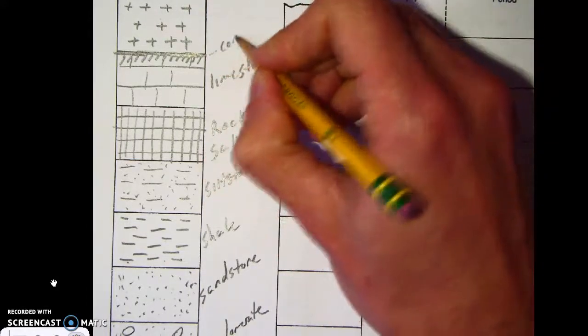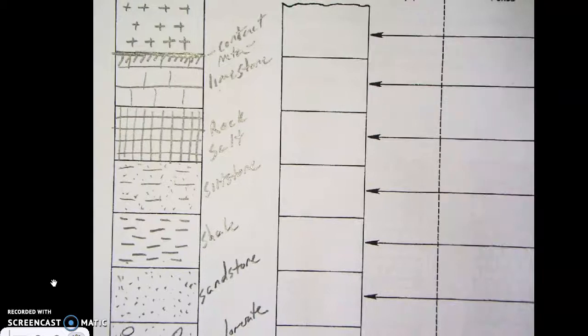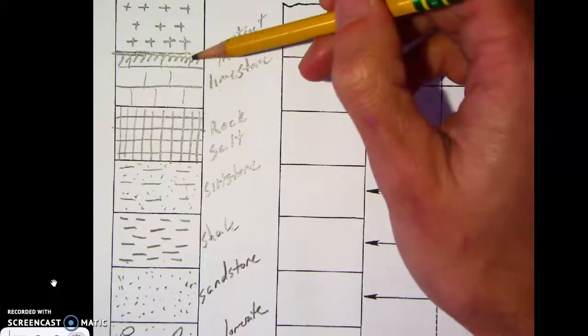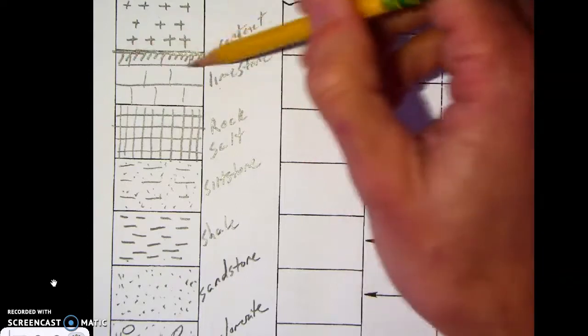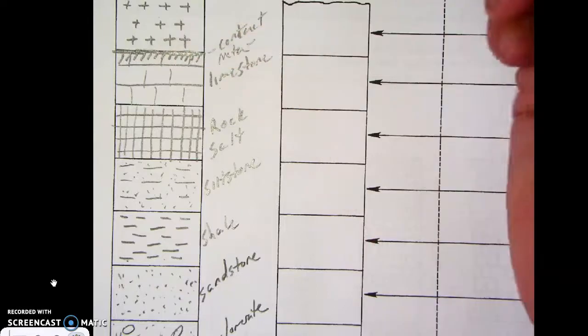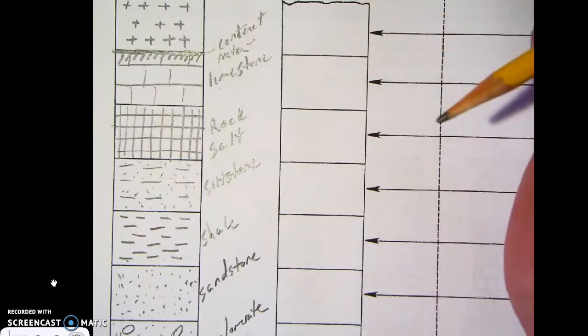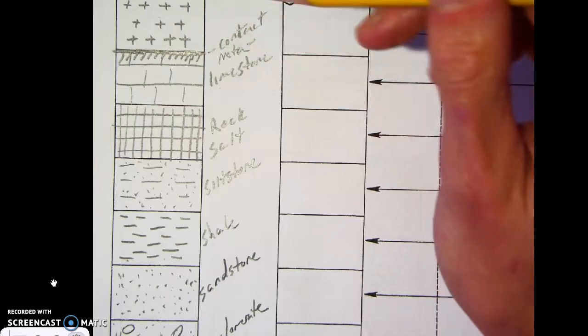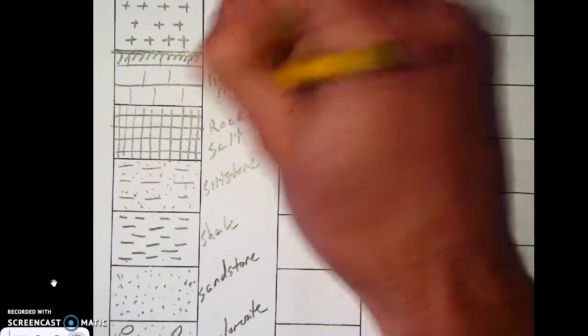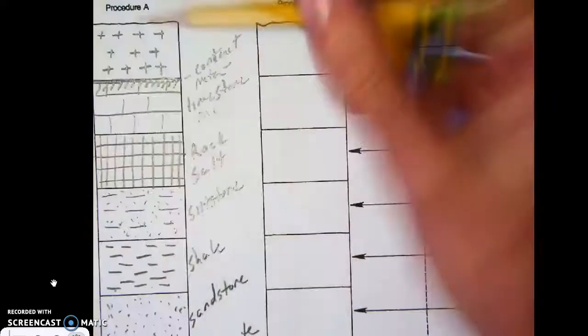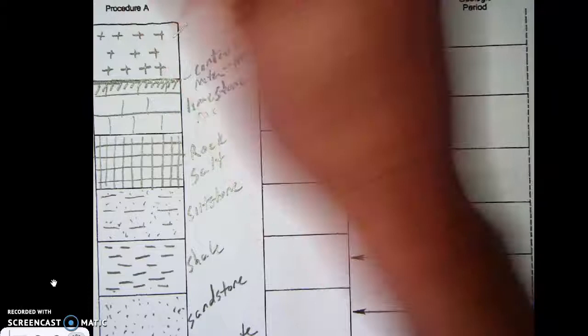We have the contact metamorphism happening there. I'll just write contact meta. Now when we went over contact metamorphism back in the fall we talked about, well in this situation we have igneous rock and limestone in between this zone of contact metamorphism where the limestone has been metamorphosed by heat. What rock would that become? I'll give you a second to think about it. The limestone, the metamorphic version of a limestone would be a marble. So this would be the marble and then up here would be the basalt.